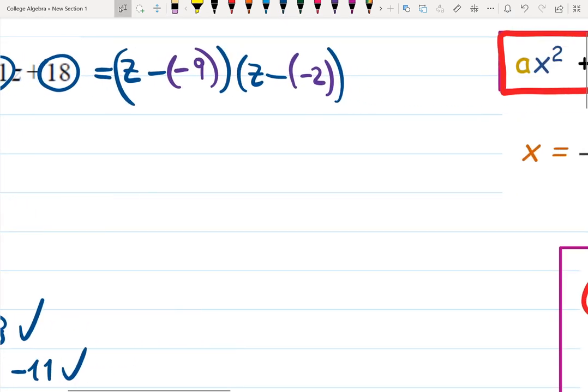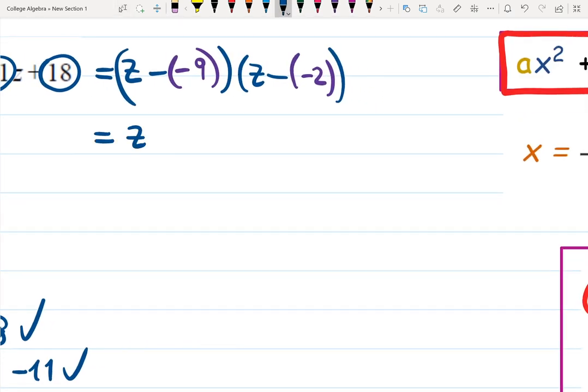And if I want to simplify and make it look better, it will be z plus 9 and z plus 2, done. And this is the answer. So this is one of the ways of doing it.